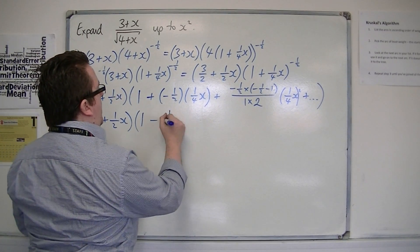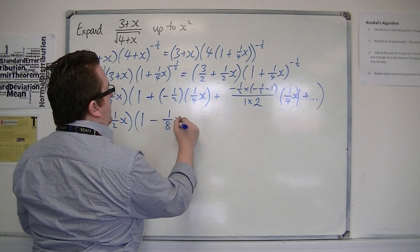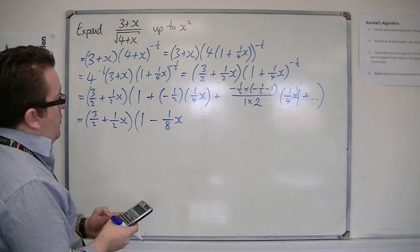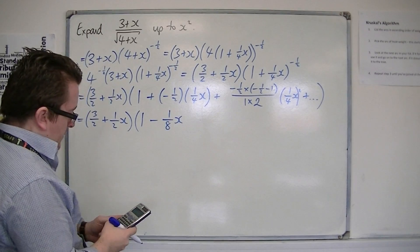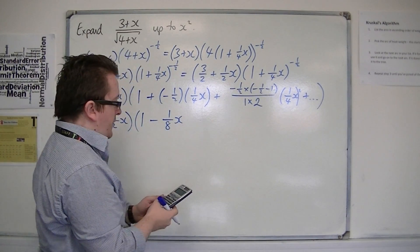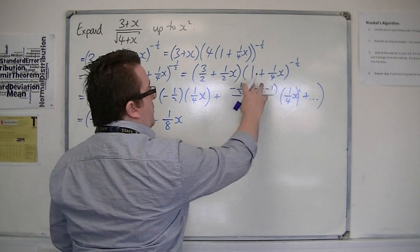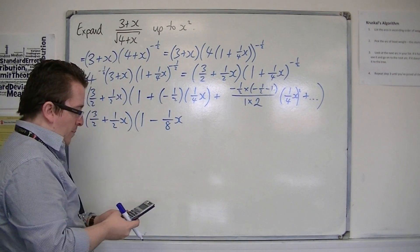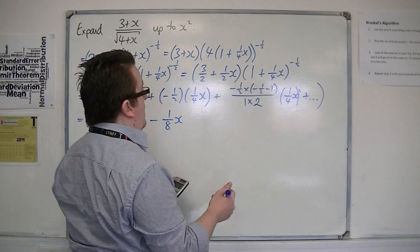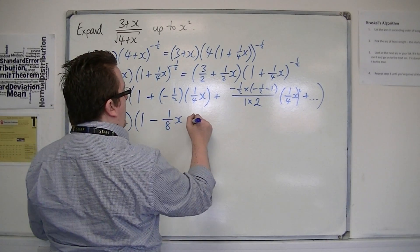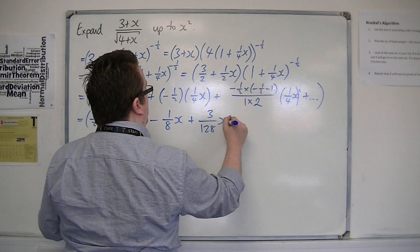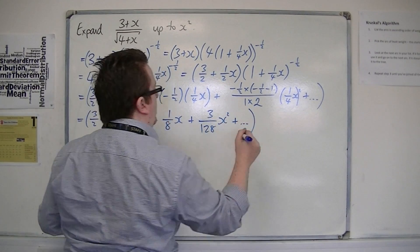So this simplifies to 1 minus x/8. Then we've got minus a half times (minus a half minus 1), divided by 2, so that gives 3/8 multiplied by 1/16, which is 3 over 128. So we've got plus (3/128)x squared, plus other terms.